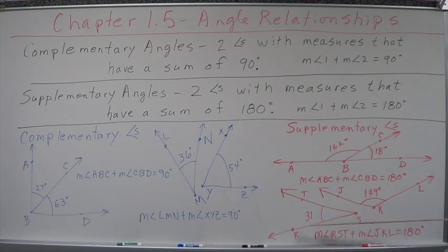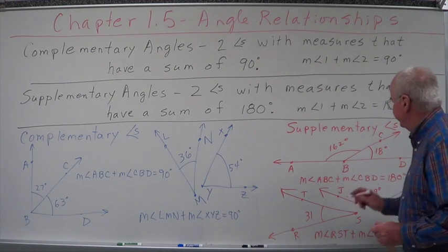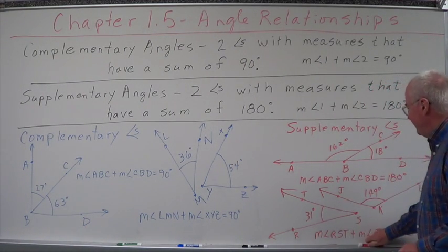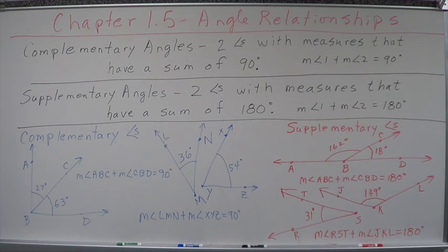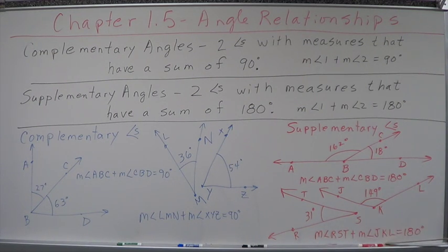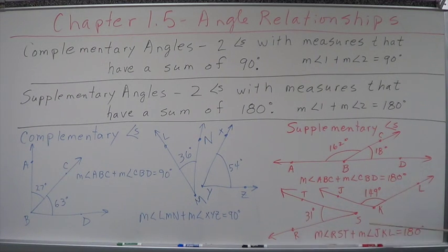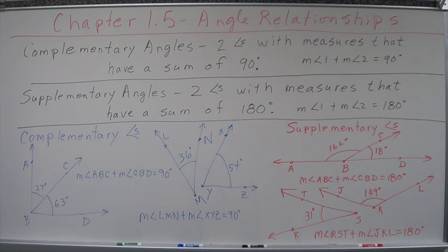Here's another set. We have angle RST at 31 degrees and angle JKL at 149 degrees. When we add those two together, the measure of angle RST plus the measure of angle JKL equals 180 degrees. These two angles are not adjacent, but when you add their measures together they equal 180 degrees, so they are supplementary. Supplementary and complementary angles do not have to be adjacent — they can be separate. These are the rules that are going to govern the algebra you do with angle relationships.